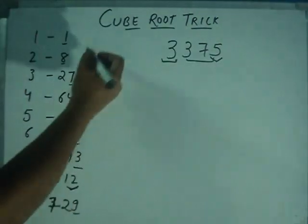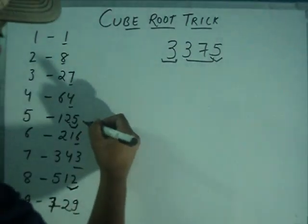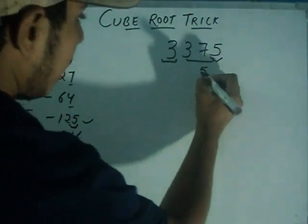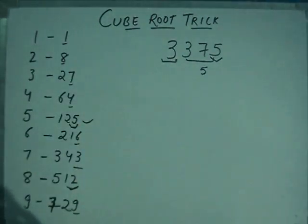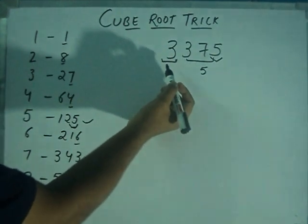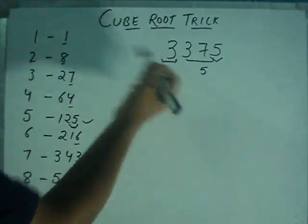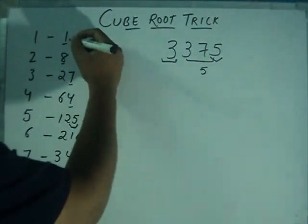Again divide this into two parts. First part consists of last three digits and remaining digits is in another part. Check the unit digit. Again with this thing, we get 5. So our unit digit is 5. And check this value and compare it with the given series. We have to check the number which is lesser than 3 or nearer to 3 cubic value. We get here is 1.